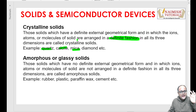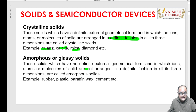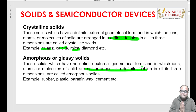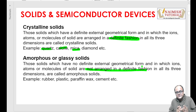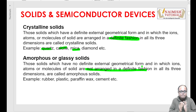Second: amorphous or glassy solids - yahan par they are not arranged in any definite pattern. Toh amorphous solids aur crystalline solids - I guess aapko samajh mein aa gaya hoga.